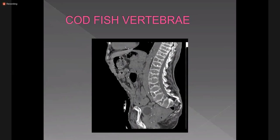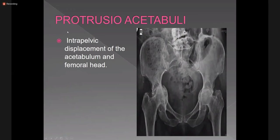This codfish vertebra is another feature of osteomalacia. Protrusio acetabuli is the intra-pelvic or medial displacement of the acetabulum and the femoral head into the pelvic cavity — seen bilaterally, more marked on the right side, and also seen in osteomalacia. There is generalized decreased bone density.